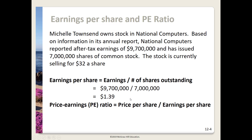You'll likely end up with a longer decimal, but since we're talking about money, we round to 2 decimal places. To calculate the price-earnings ratio, we take the price per share from our story — $32 — and divide it by the earnings per share we just determined. Taking $32 divided by $1.39, we get a P/E ratio of 23.